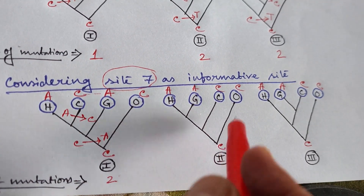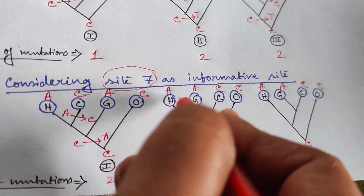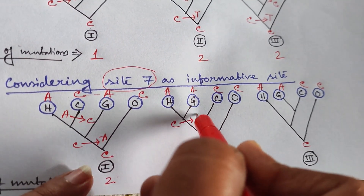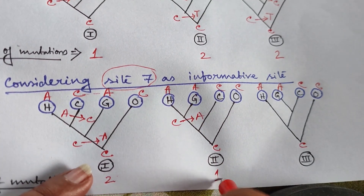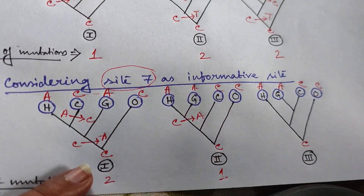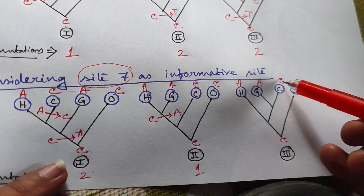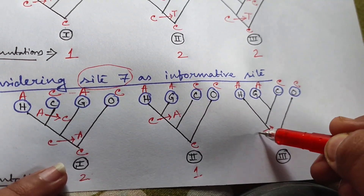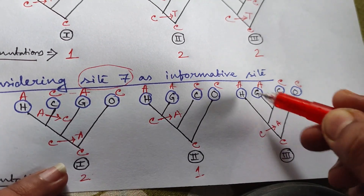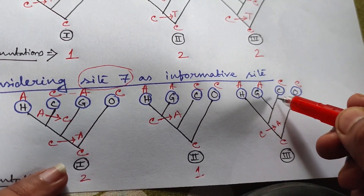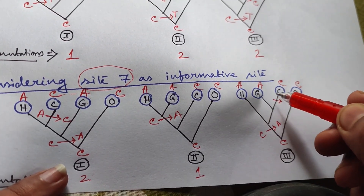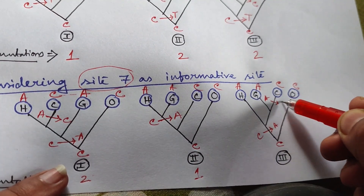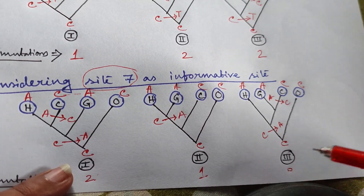For tree 2 at site 7: C to C, no change on the orangutan side. Both human and gorilla are A — draw one mutation C to A on the branch leading to human+gorilla. Lowest number of mutations = 1 for tree 2. For tree 3 at site 7: draw C to A so three taxa become A, then A to C to convert one back. Lowest number of mutations = 2 for tree 3. So site 7 gives: tree 1 = 2, tree 2 = 1, tree 3 = 2.